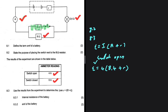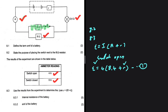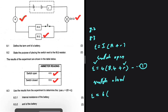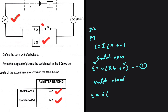We have two variables — the EMF and the internal resistance — so we call this equation 1 and set up another equation. When the switch is closed, the EMF stays the same. The current is 6 amps, but we need the external resistance. Let's look at the diagram: when the switch is closed, the 8 ohm resistor is in parallel with the other 8 ohm resistor.